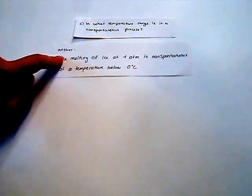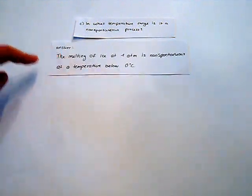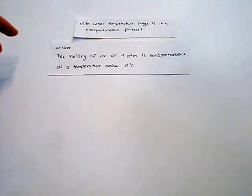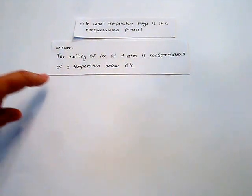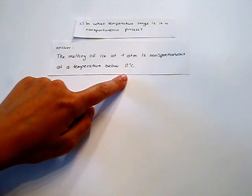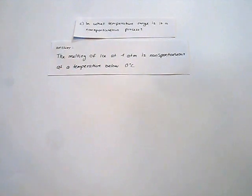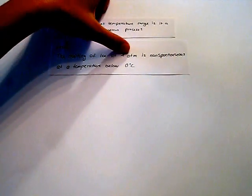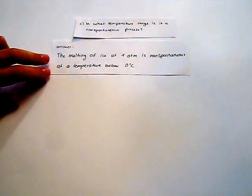The third question is in what temperature range the process is non-spontaneous. This is the opposite to the last question, and so we can say that the melting of ice is non-spontaneous at a temperature below zero degrees Celsius, because it's spontaneous above zero degrees Celsius at a pressure at one atmosphere.